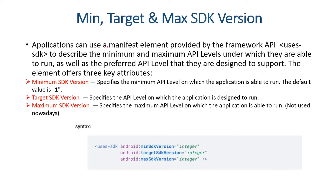Applications can use a manifest element provided by the framework API called uses-sdk. This element describes the minimum and maximum API levels under which the application is able to run, as well as the preferred API level it is designed to support. The manifest element offers up to three key attributes.